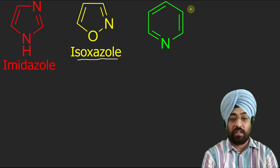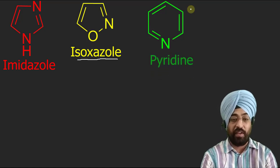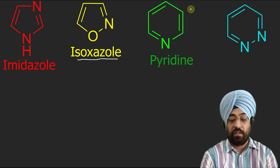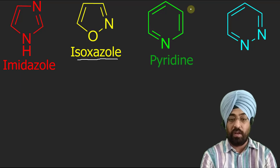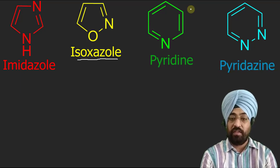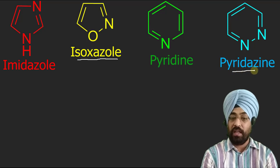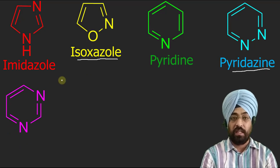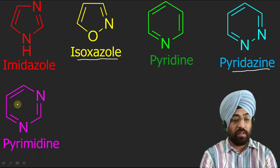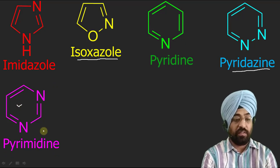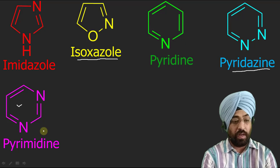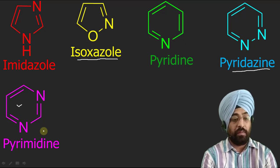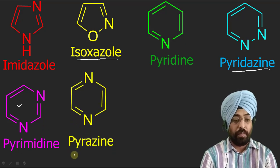Now this compound you are quite familiar with — many times you have studied its properties and compared its basic properties. This is pyridine. Its name pyridine is more popular. Now this compound in which we have two nitrogen atoms in the ring is called pyridazine — this is also very important. The next compound is pyrimidine — a quite important compound. Purines and pyrimidines are the bases present in DNA. Now this is pyrazine.